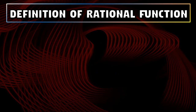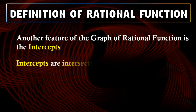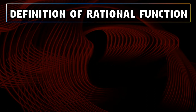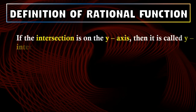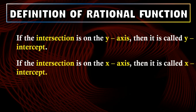Another feature of the graph of a rational function is the intercepts. Intercepts are the intersection of the axis and the graph. If it is an intersection of the graph and the y-axis, then it is called the y-intercept. If it is an intersection of the graph and the x-axis, then it is called the x-intercept.